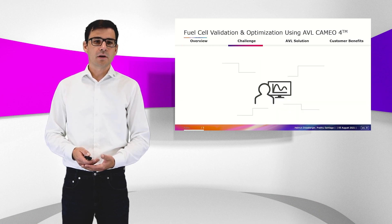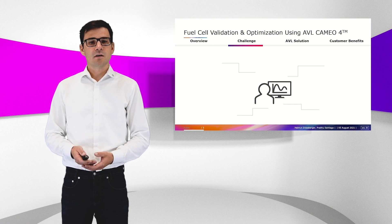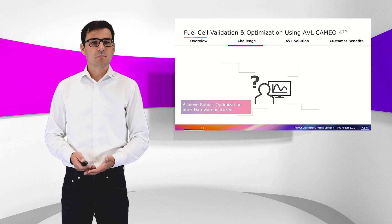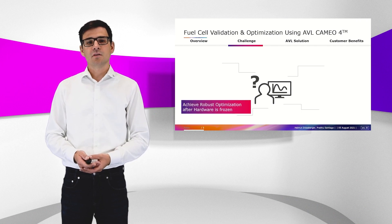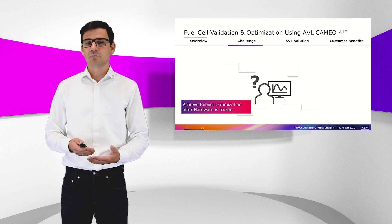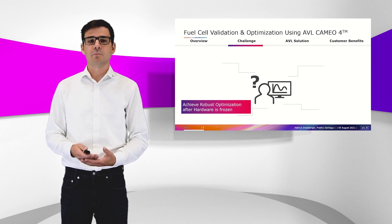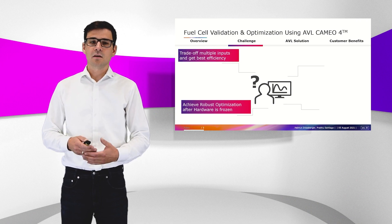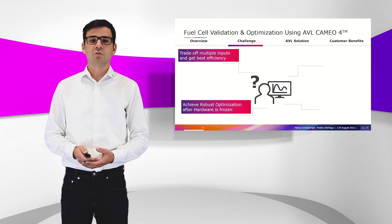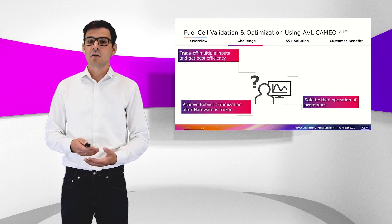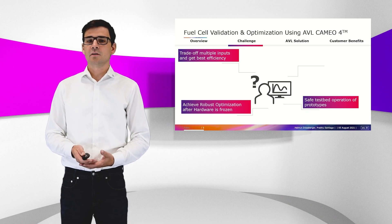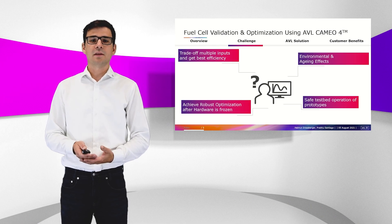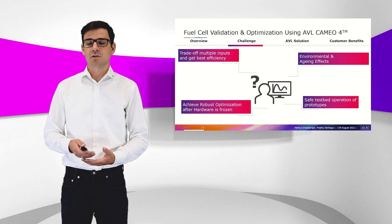First, we will have a look at the challenges that an application and development engineer will face. In optimization tasks, there is the challenge to have hardware frozen and you have to find the optimum calibration which is yet robust. In a multi-dimensional input space you have to find the best efficiency, you have to operate the testpads safely and care for expensive prototypes, and also take care for environmental effects and aging effects.